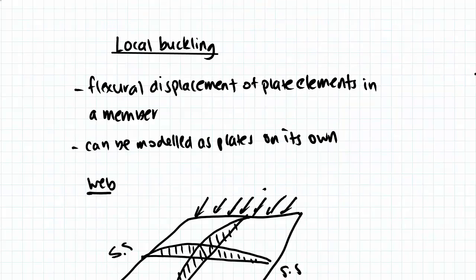So looking at local buckling, local buckling as a general definition in steel design is a flexural displacement of plate elements in a single member. Now this is in contrast to the Euler or flexural buckling of the whole member. In local buckling instead, it's localized to the plate elements of a section.